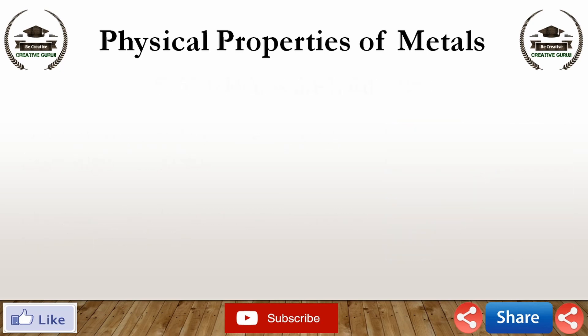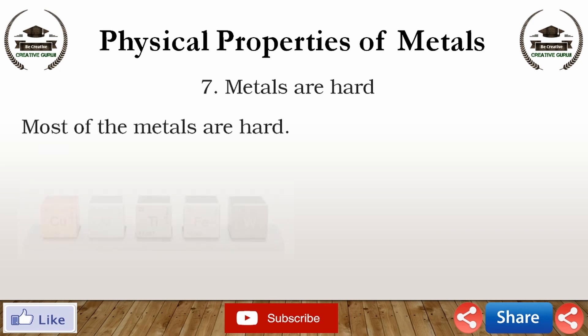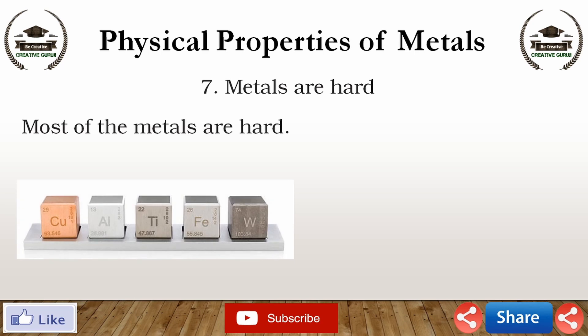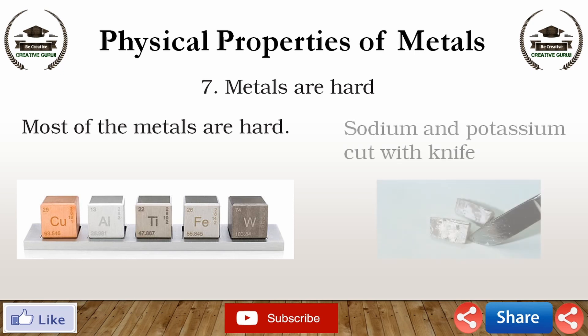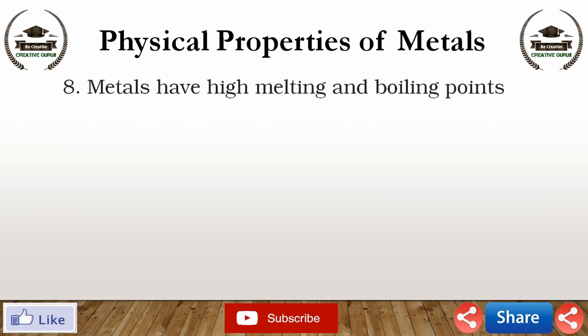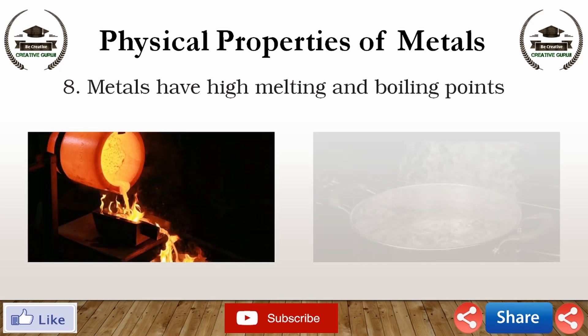Seventh property: metals are hard. Most metals are hard, but not all metals are equally hard. Metals like iron, copper, aluminium, etc. are quite hard and cannot be cut with a knife. Sodium and potassium are common exceptions which are soft and can be easily cut with a knife. Last physical property of metals: metals have high melting and boiling points. Most of the metals have high melting and boiling points.